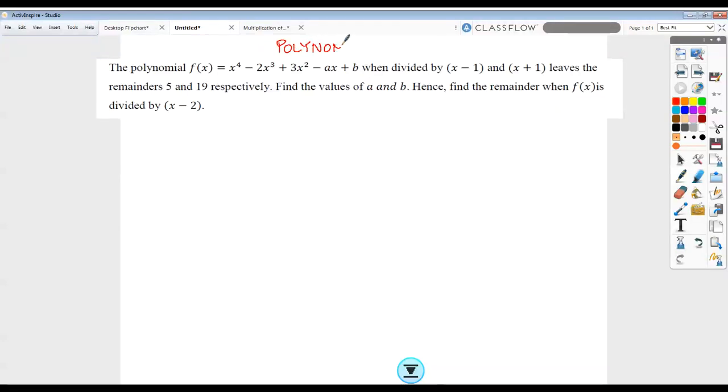Hello, today our question on polynomials is as follows. The polynomial f(x) when divided by (x - 1) and (x + 1) leaves the remainders as 5 and 19 respectively.